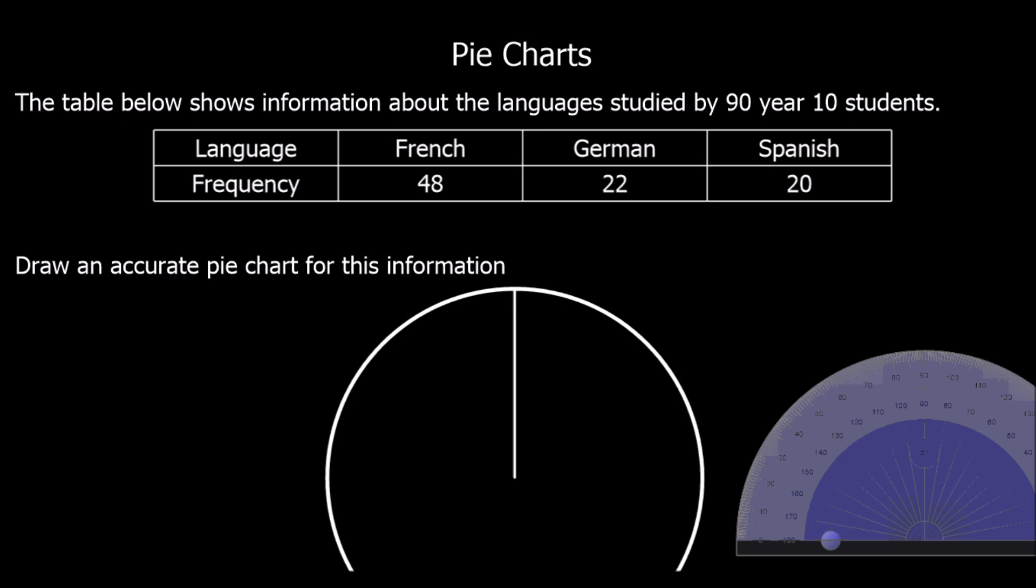So we're going to look at a question. Here we've got a table that shows information about the languages studied by 90 year 10 students. We've got French, German and Spanish, with frequencies of 48 French, 22 German and 20 Spanish. If I write total on the end, in total there are 90 students. If we add up 48, 22 and 20, we should get 90.